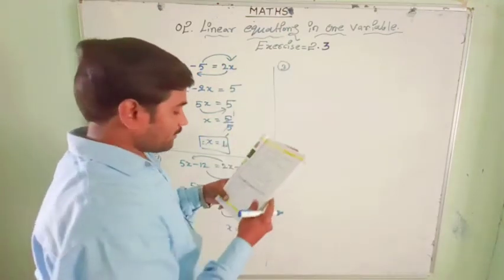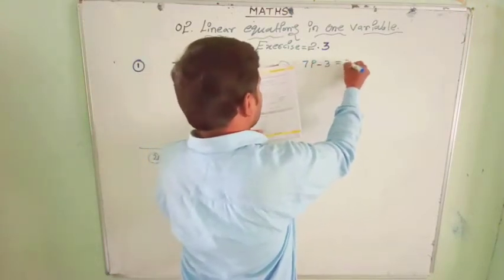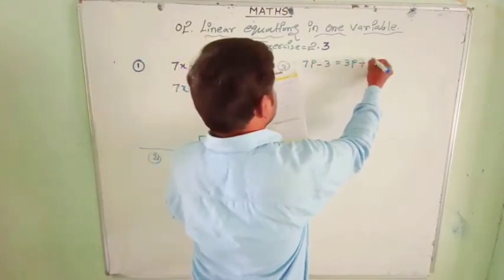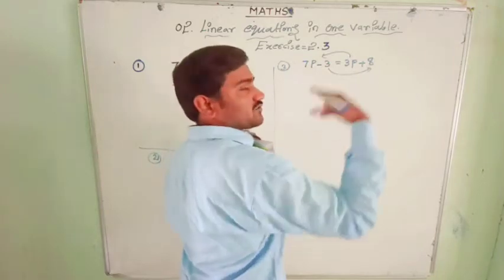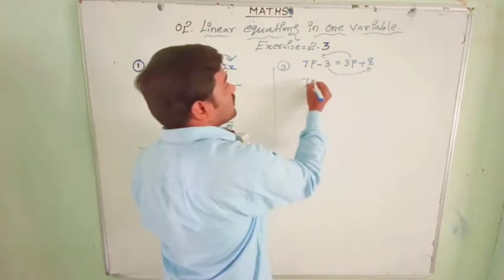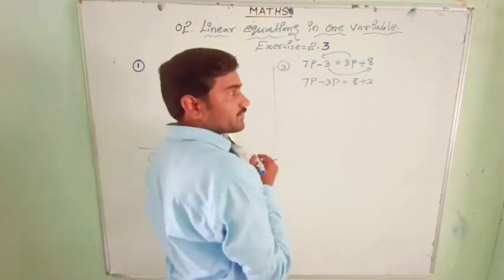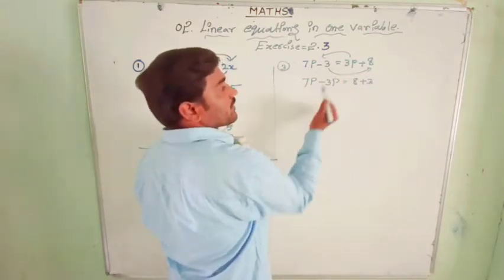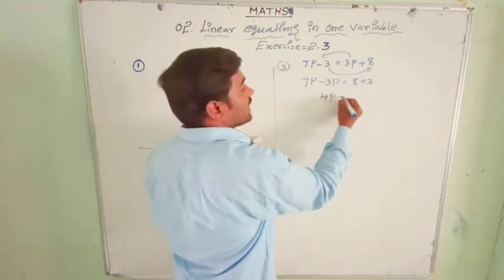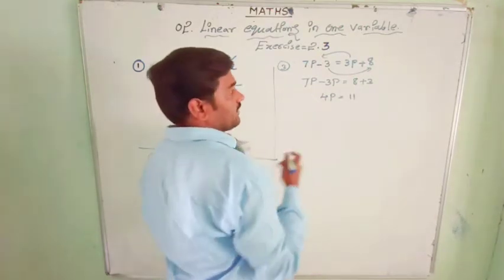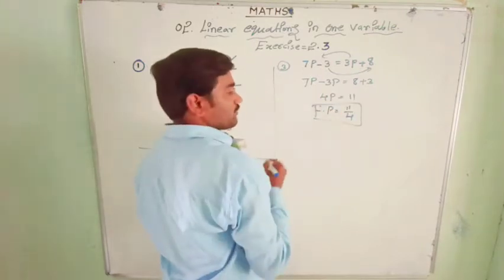The third problem: 7p minus 3 equal to 3p plus 8. This 3p will come to this side and minus 3 will transfer to the RHS side. So 7p minus 3p equal to 8 plus 3. 7p minus 3p is 4p, equal to 11. Therefore p equal to 11 by 4.